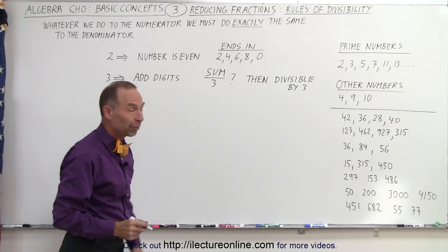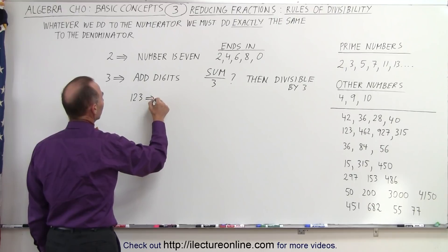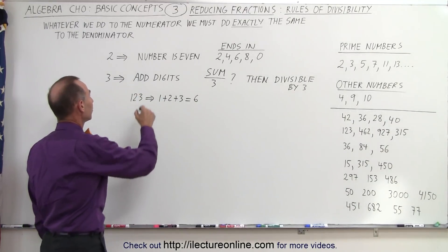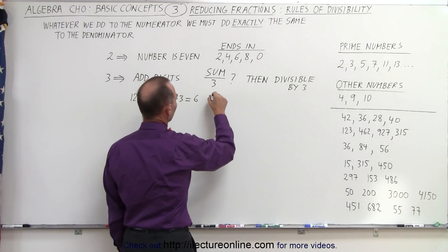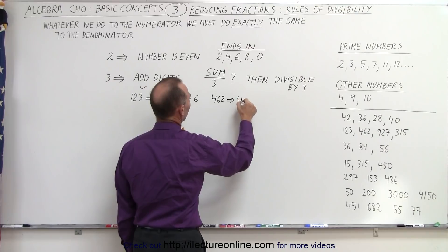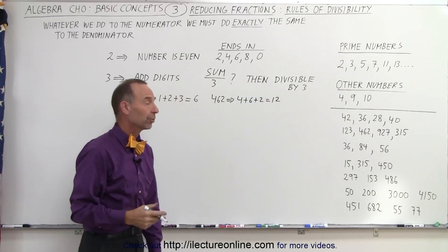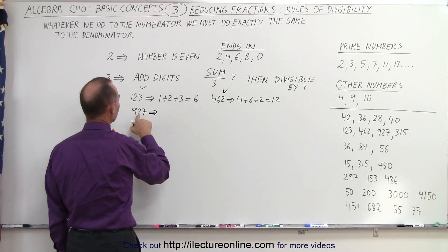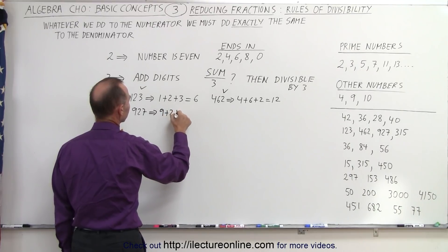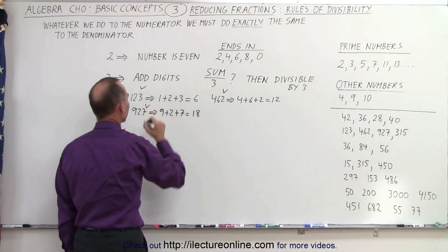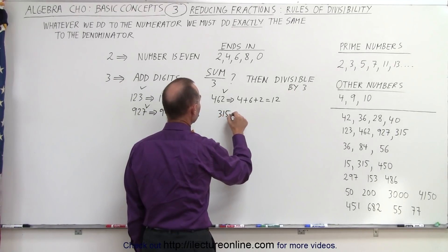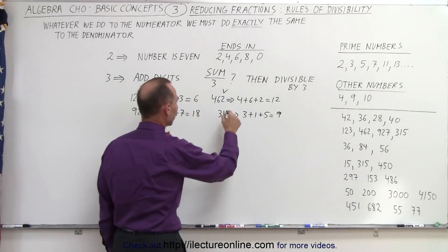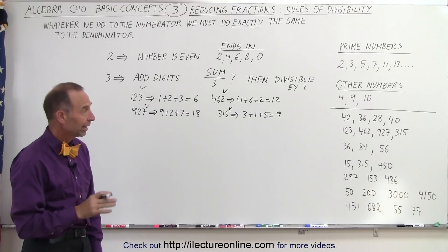We'll do some examples. Starting with 123: we add 1 plus 2 plus 3, which equals 6. Since 6 is divisible by 3, the number 123 is divisible by 3. Next, 462: 4 plus 6 plus 2 equals 12, and 12 can be divided by 3, so 462 is divisible by 3. How about 927? We have 9 plus 2 plus 7, that's 18, and since 18 can be divided by 3, so can 927. Finally, 315: 3 plus 1 plus 5 equals 9, and since 9 can be divided by 3, the whole number is divisible by 3.